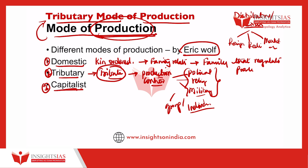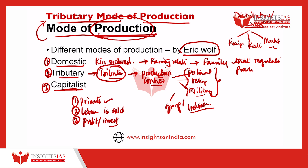The capitalistic mode of production is centered around three features. First, private ownership of the means of production. Second, workers sell their labor power to capitalists in order to survive — labor is sold. Third, surpluses of wealth are produced and these surpluses are either kept as profit or reinvested in production. So private ownership of means of production, labor is sold for survival, and profit is either stored or reinvested to generate further surplus.